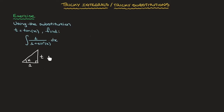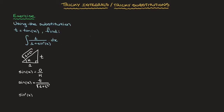Using the same right-angle triangle, we can find an expression for sine of x, and therefore for sine squared of x. For that, we need the hypotenuse. Using Pythagoras' theorem, the hypotenuse equals the square root of 1 squared plus t squared, i.e., √(1 + t²). Since sine of x equals opposite over hypotenuse, sine x = t over √(1 + t²). Therefore, sine squared of x equals t² over (1 + t²).